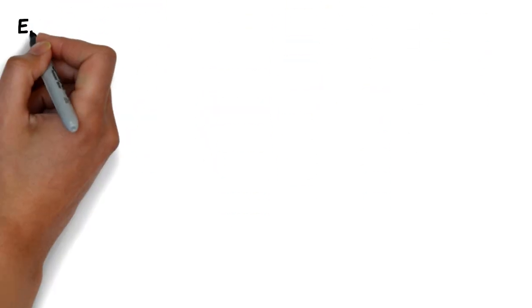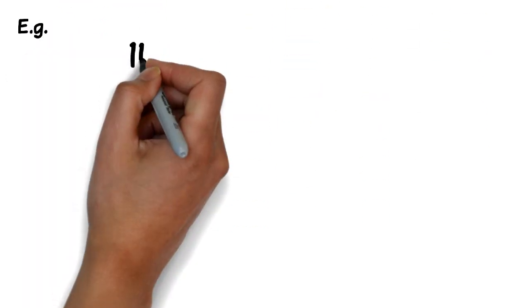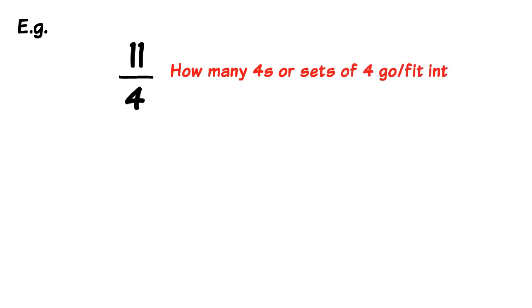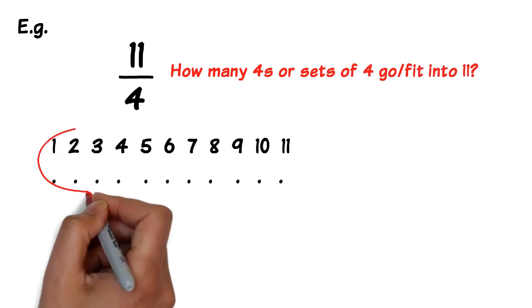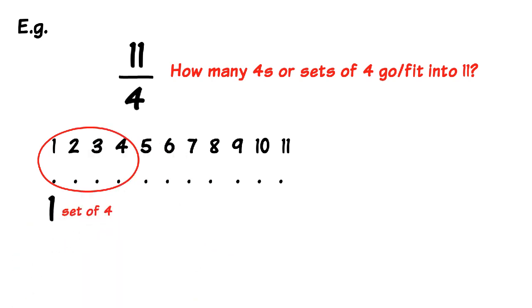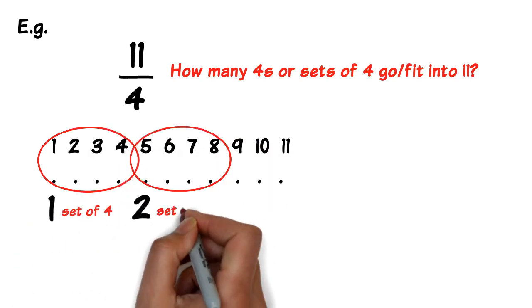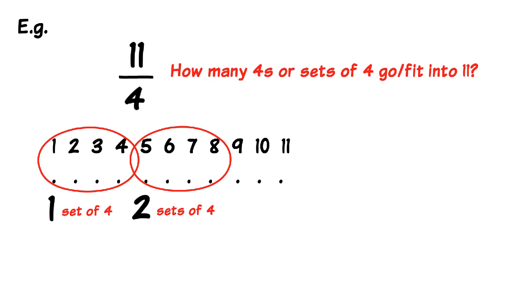Let's take a look at another example. If we have 11 over 4, we ask ourselves, how many 4's or sets of 4 can appear or fit into 11 items? Now we can see that 2 sets of 4 appear in 11 items. We say 2 sets because 2 sets of 4 is 8. So 2 sets of 4 appear in 11 items.